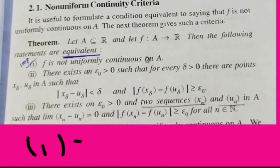x-delta, u-delta — that is the point of x-delta, u-delta. This is xn, un. This is a random a. We have a limit. The limit is zero. Now, f(xn) minus f(un) is greater than or equal to epsilon, for all n belonging to N. That's the statement.